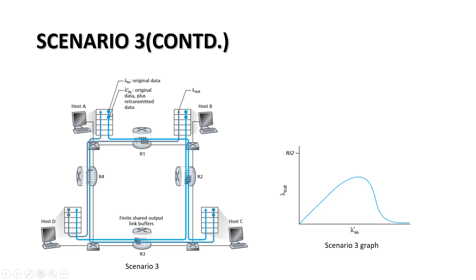The diagram for this scenario shows transmission rate as lambda in, and real retransmission data rate as lambda dash in, and at the receiving end it will be lambda out. There are 4 hosts: host A, B, C, and D, connected via R1, R2, R3, and R4 routers, where finite buffers are added to the routers.